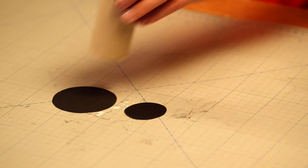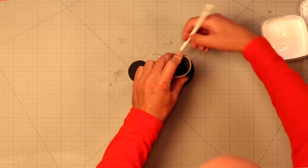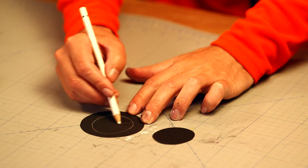We also need to attach the bottom circle to the toilet roll. Check this technique.